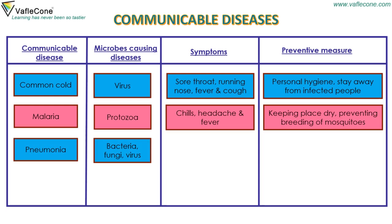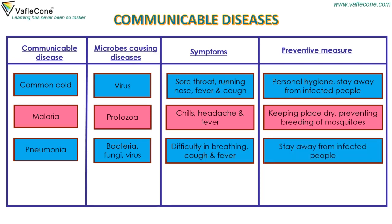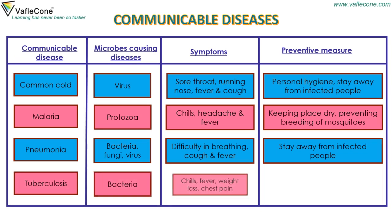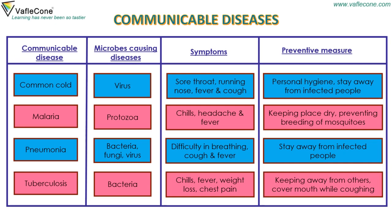Pneumonia symptoms: difficulty in breathing, cough, and fever. Preventive measure: stay away from infected people. Tuberculosis: symptoms are chills, fever, weight loss, and chest pain. Preventive measures: keeping away from others and covering mouth while coughing.